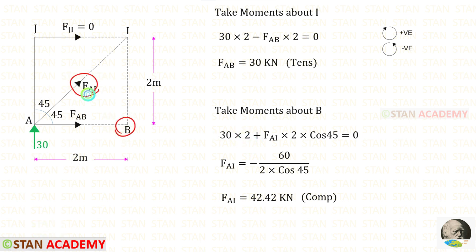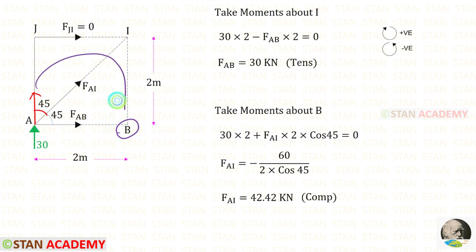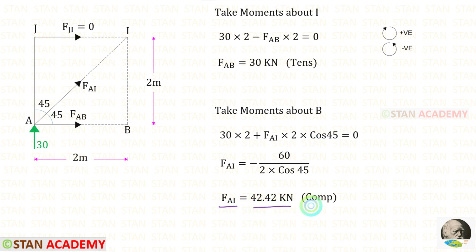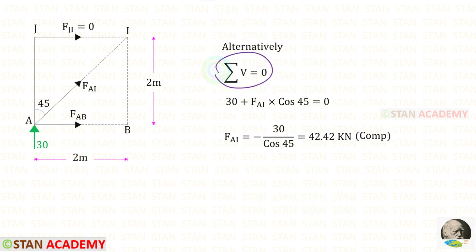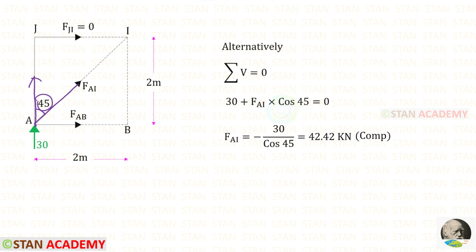About point B, FAI is not perpendicular — it is inclined. We can resolve FAI with respect to AB. To make FAI perpendicular to AB we need 45 degrees. FAI is acting clockwise so it is positive with a distance of 2, multiplied by cos 45. For FAI we get a negative value, meaning it is compressive. Alternatively, applying sigma V equals zero: 30 is positive acting upwards, and FAI is inclined so we multiply by cos 45. In this way also we get FAI equal to 42.42 kilo-Newton, compressive.